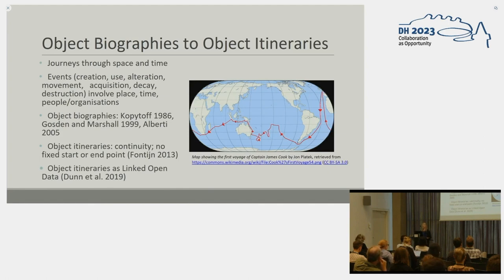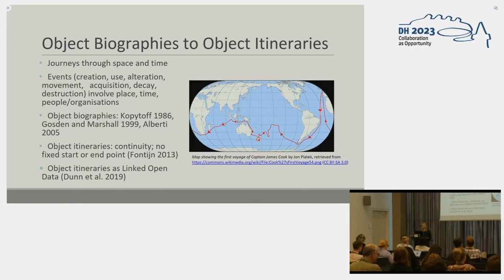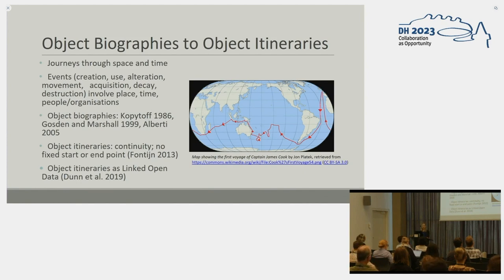These cultural heritage objects are not static or inert. Instead, each one represents a journey through space and time to reach its current position. This journey consists of a sequence of events, including creation, use, alteration, movement, and acquisition, and may ultimately lead to decay or destruction. Each of these events occurs in a given place, at a given time, and often involves the actions of a person or organisation. As such, these sequences are often referred to as object biographies, a term introduced by Kopitov in a social anthropology context, and since adopted in archaeology and museum studies. The term object itinerary has a similar meaning, but it implies a more continuous sequence without the fixed events of birth and death. An itinerary might look back to the formation of the materials from which the object was constructed, or look forward to its future receptions or remediations. Following the proposition by Dunn et al. that such itineraries may be represented as linked open data, we have applied these principles as part of our work on the Tools of Knowledge project.